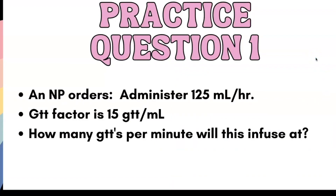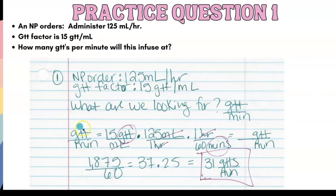In this video, what I'm covering is drops per minute — finding drops per minute, how do you do it, how do you set it up. First practice question: an NP orders administer 125 milliliters per hour. The drop factor is 15 drops per milliliter. How many drops per minute will this infuse? With dimensional analysis, you always want to ask yourself: what are we looking for? And that's what you put on the left-hand side of the problem. We are looking for drops per minute.